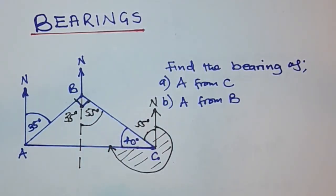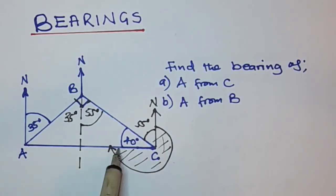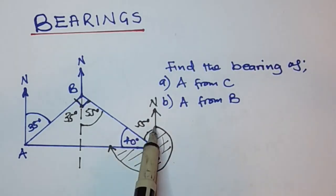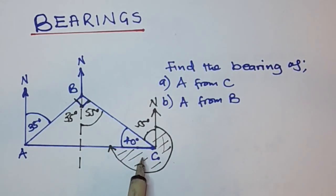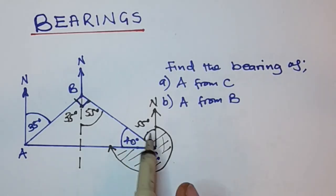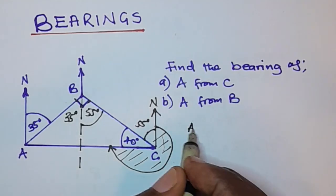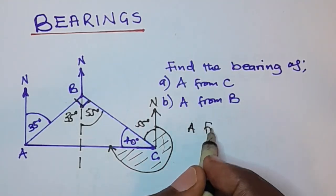Now to find this bearing, we are going to say 360 degrees — which is the full revolution — minus 40 degrees plus 55 degrees.